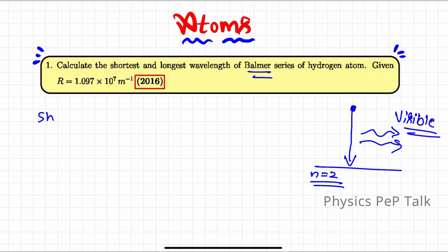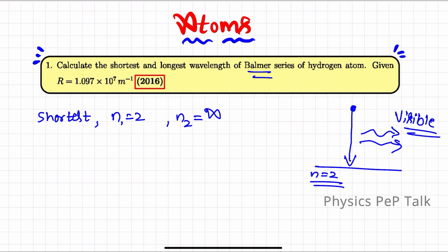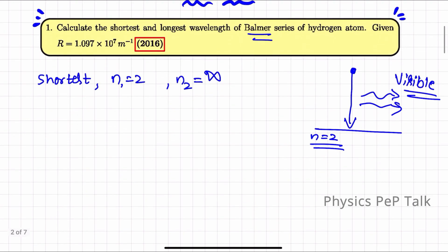So now we have to find the shortest wavelength. For the shortest wavelength, n1 = 2 and n2 = infinity — when the electron comes from infinity to the n = 2 state, we get the shortest wavelength. The formula is: 1/λ = R × (1/n1² − 1/n2²).